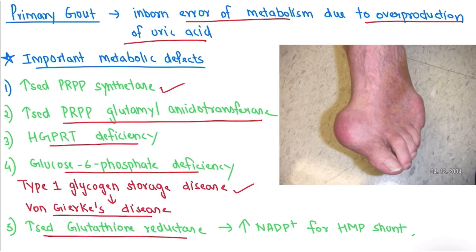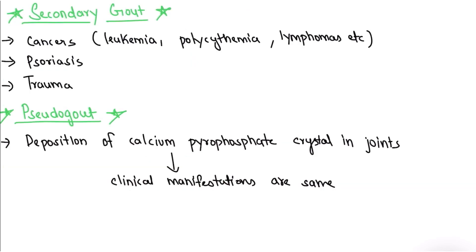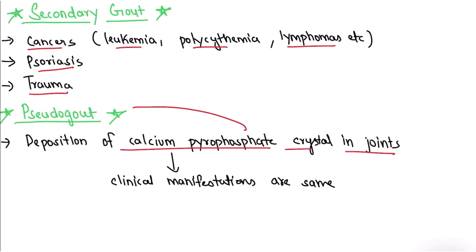For professional exams, you need to write these five causes, the pathway, the definition of gout and hyperuricemia, and the normal range — that would be enough for a 5-mark question. Coming to secondary gout: secondary gout involves increased uric acid production due to other causes such as cancers, leukemia, polycythemia, lymphomas, psoriasis, and trauma. Pseudogout refers to deposition of calcium pyrophosphate crystals in joints; the clinical manifestations are the same as gout — inflammation, swelling — but it is not urate crystals.